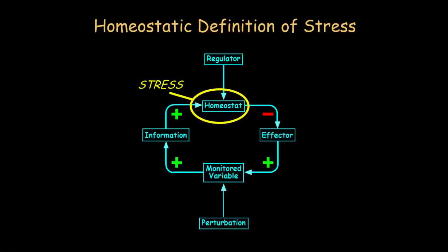Everybody knows what stress is, but nobody knows how to define it. By thinking in terms of integrative physiology, there's a pretty straightforward definition that comes about. What does stress have to do with the autonomic nervous system? We already talked about the SOTAS case, so we know there's some relationship between distress and adrenaline. One nice advantage of the integrative physiological approach is that you can actually define stress.